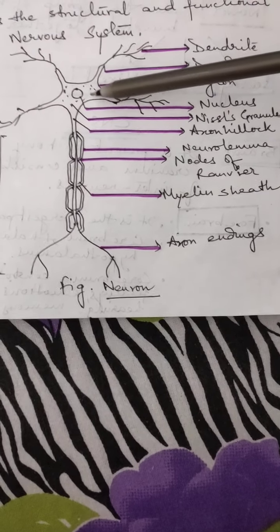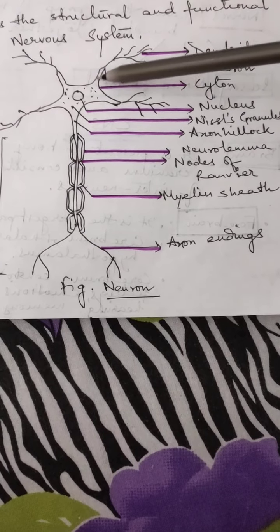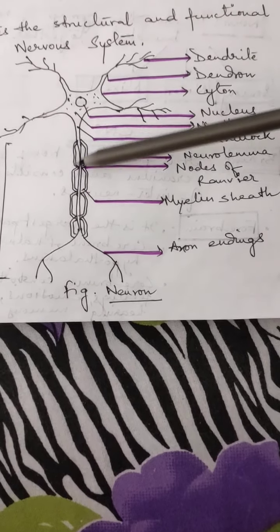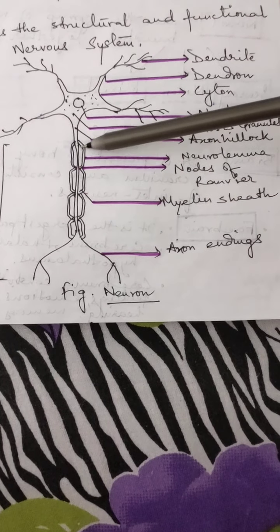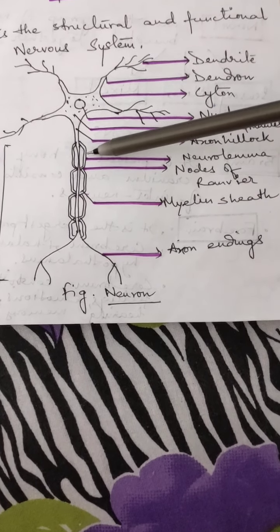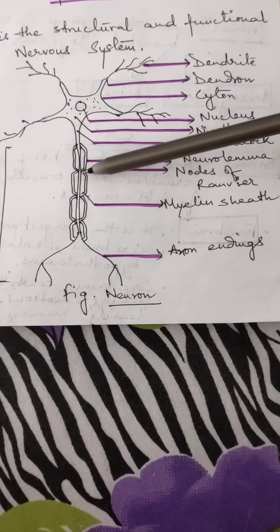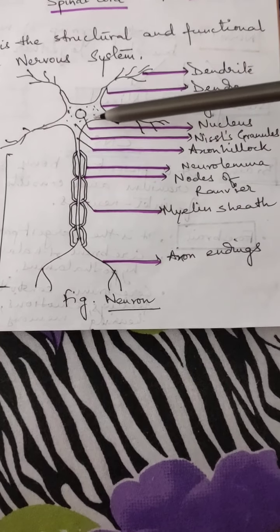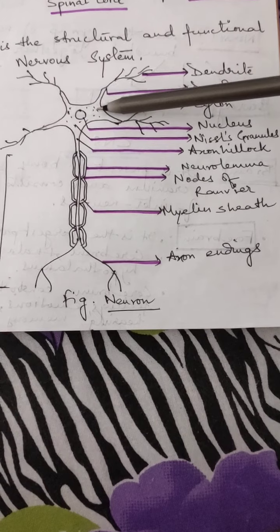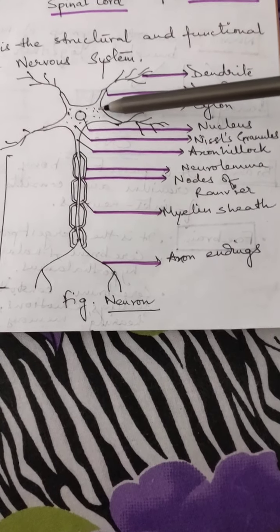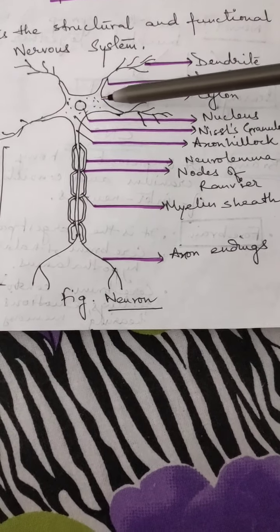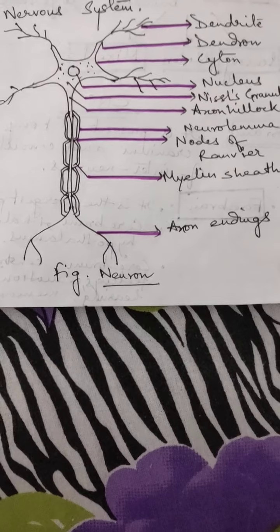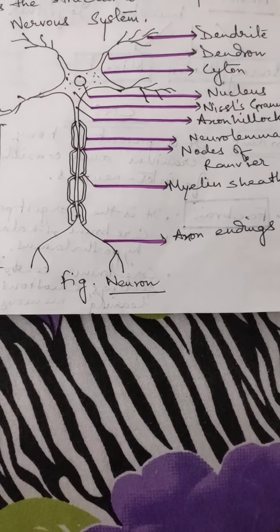In the diagram, this is the cytone, these are the dendrons, these are the dendrites, this is the nucleus, and this is the longest extension known as axon. It has got many layers like neurolemma, myelin sheath, nodes of Ranvier, and these are the axon endings. The dotted structures are known as Nissl's granules. This is the structure of a nerve cell or neuron.